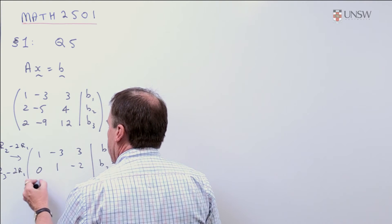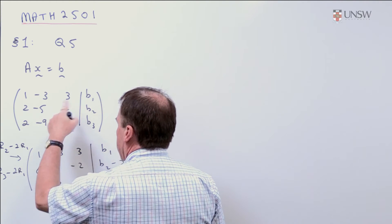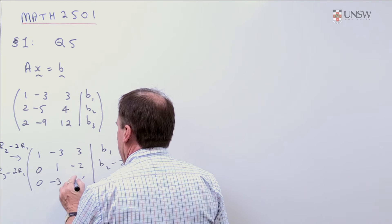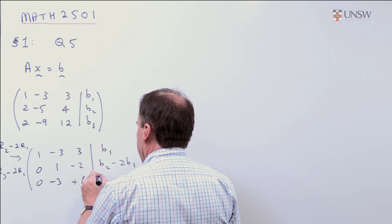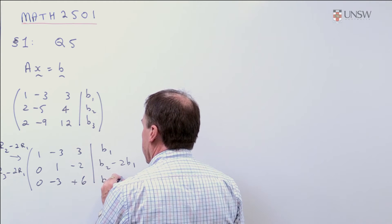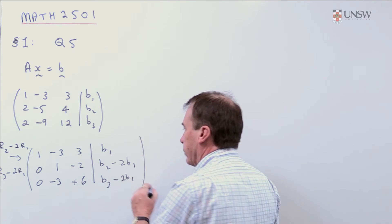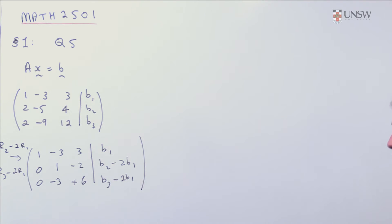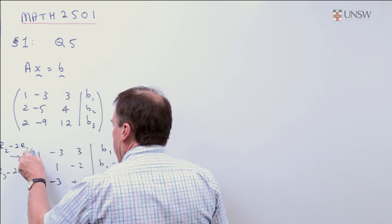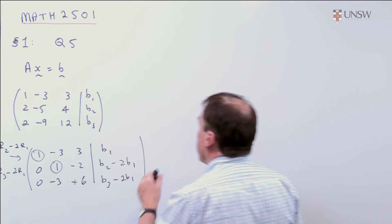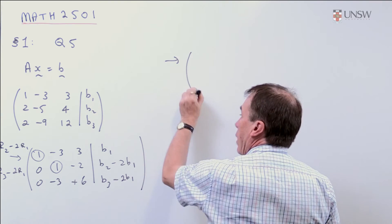So, at this stage, we've got a nice pivot here, we've got a nice pivot here, and I can use that one now to get rid of the minus 3 below.